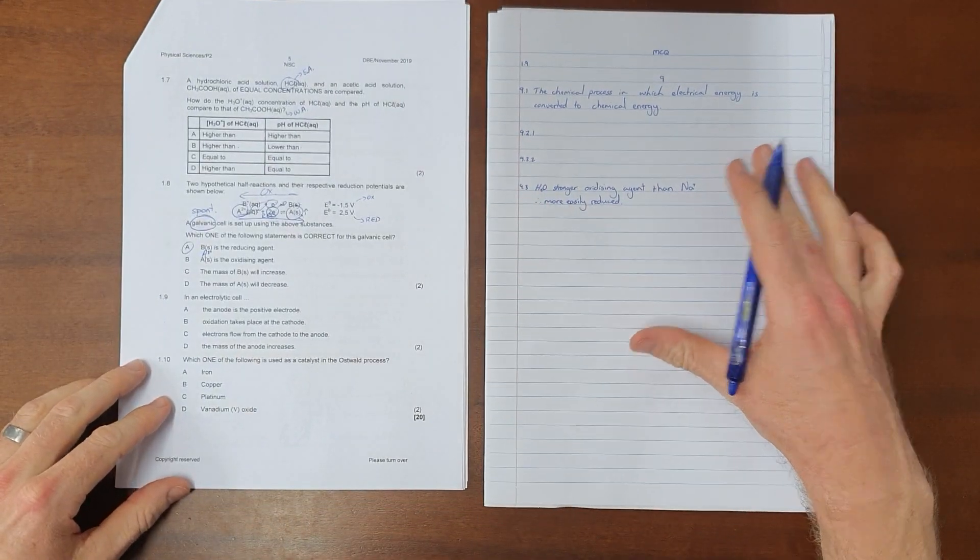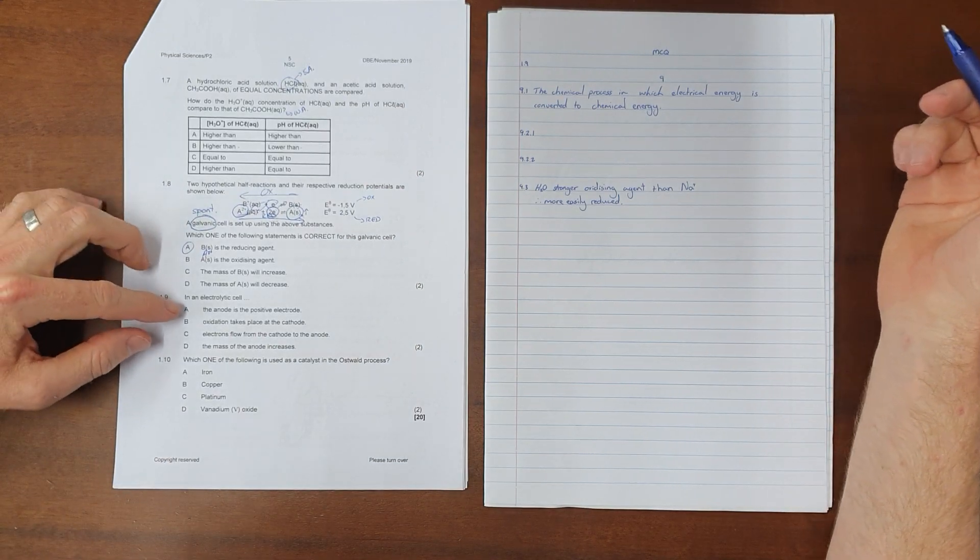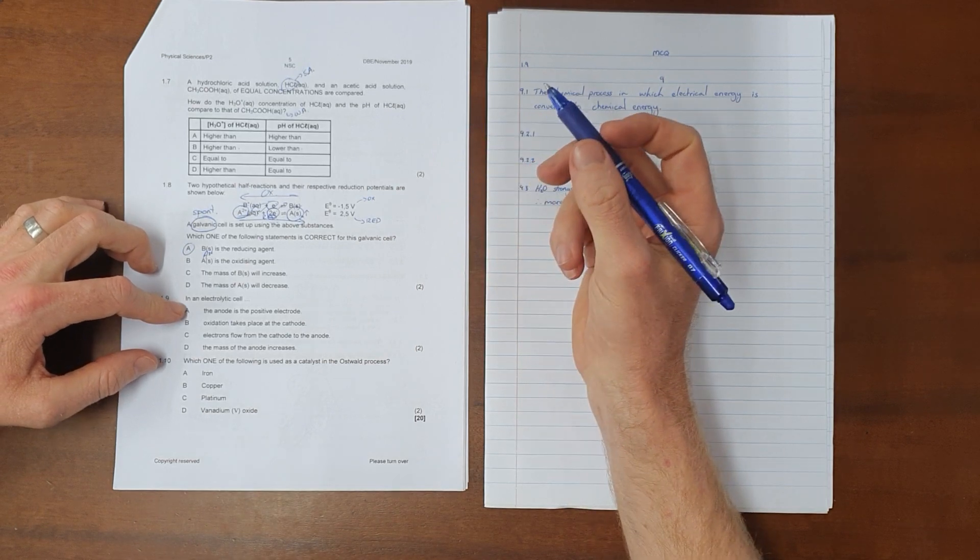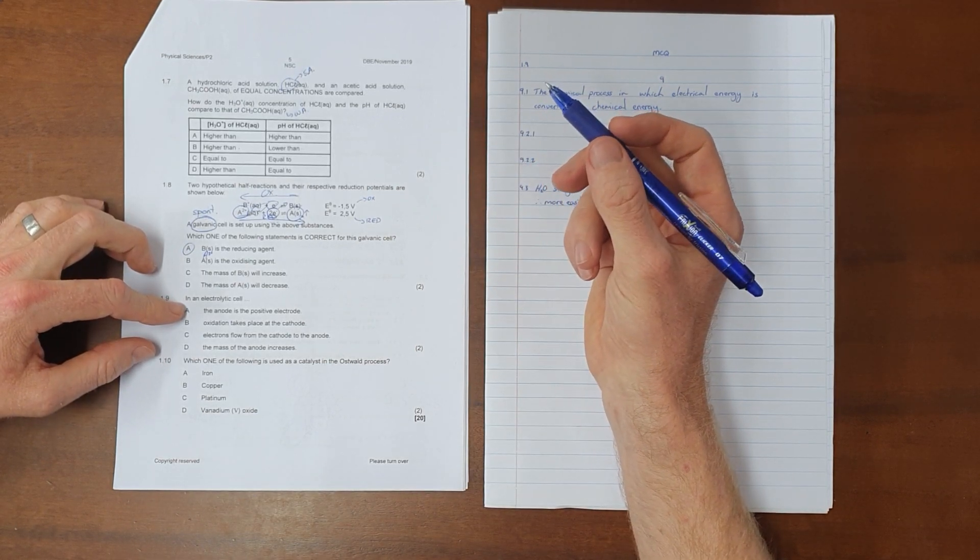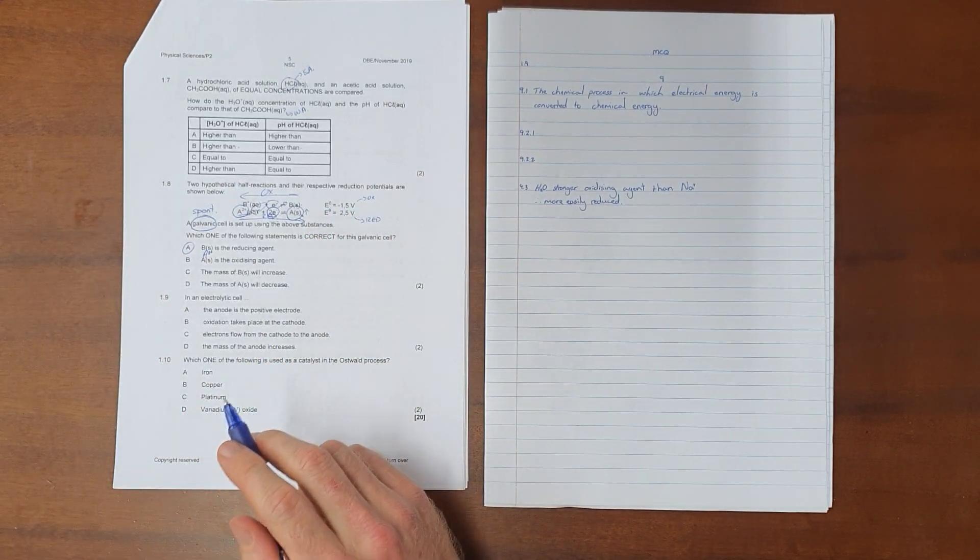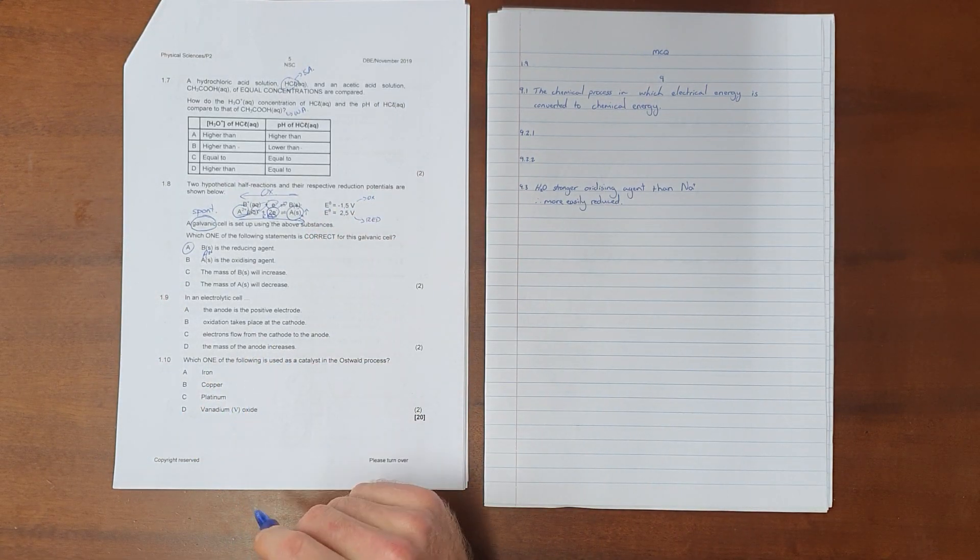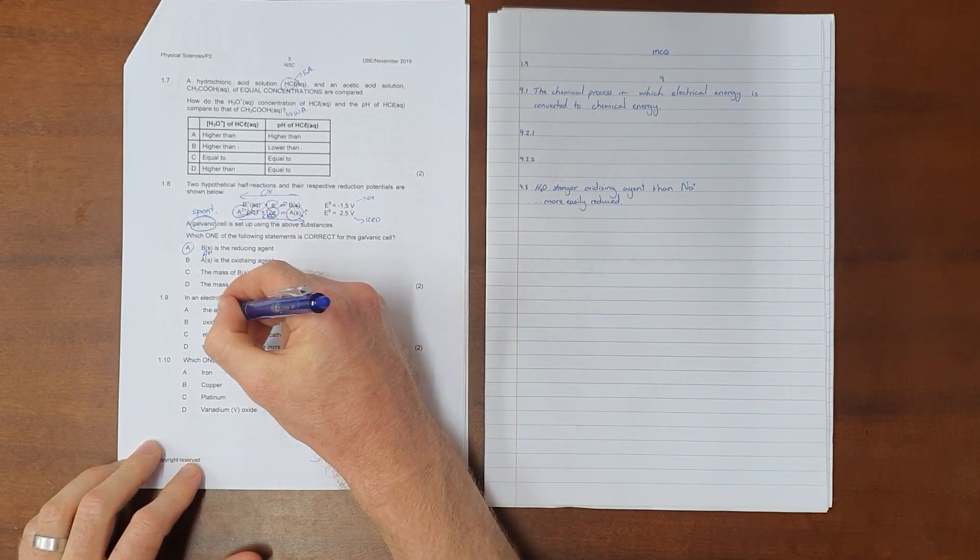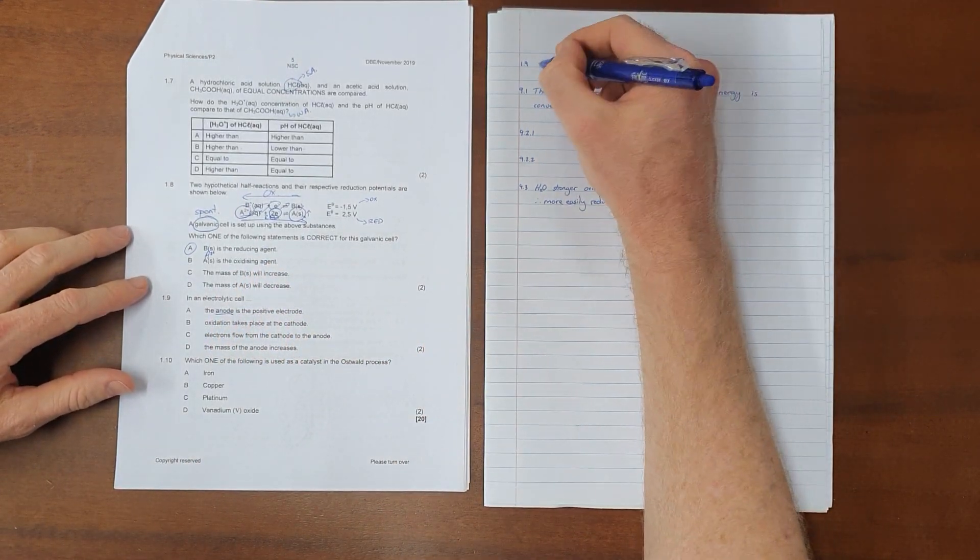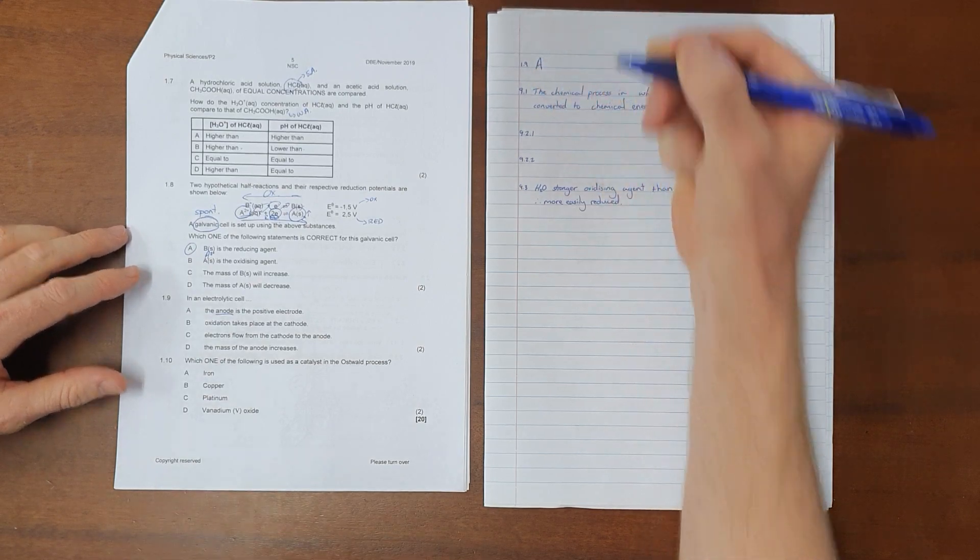In an electrolytic cell, the anode is the positive electrode. We can stop right there because we know that in a galvanic cell, the cathode is the positive electrode, and that is the change that happens between an electrolytic and a galvanic cell when it is no longer spontaneous - the anode now becomes the positive electrode. So the correct answer to question 1.9 is option A.